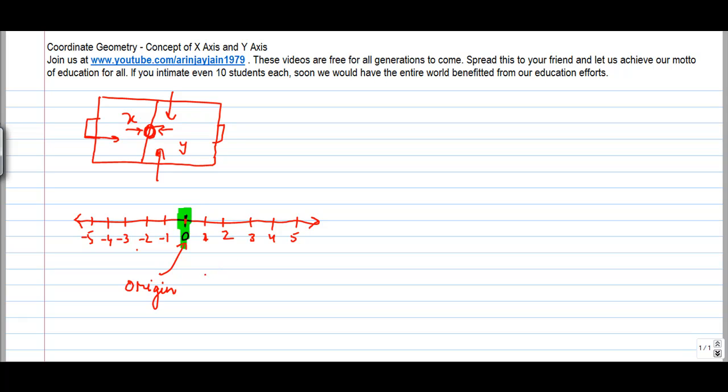Now when you move towards this direction, all the points that are coming in are positive points. So you call this as positive direction. And similarly this is the negative direction.